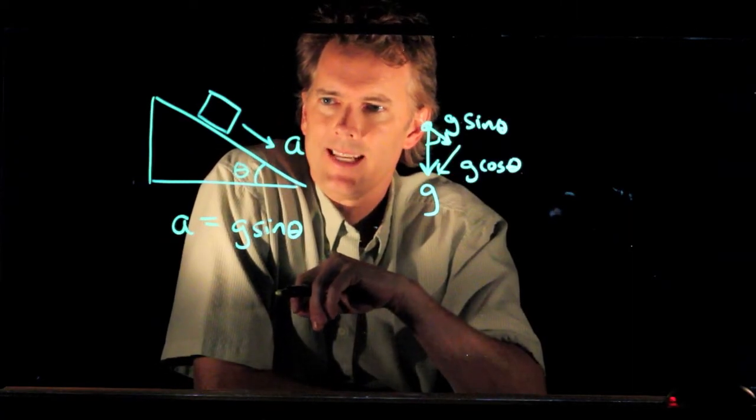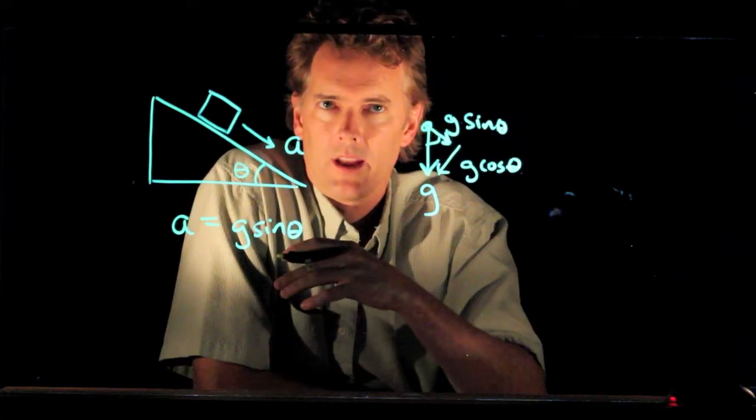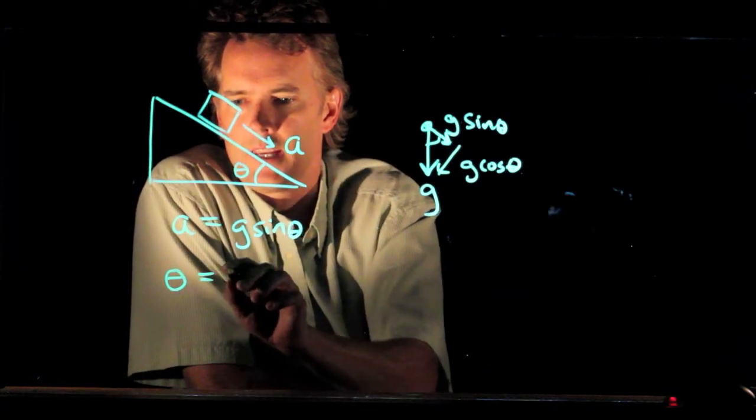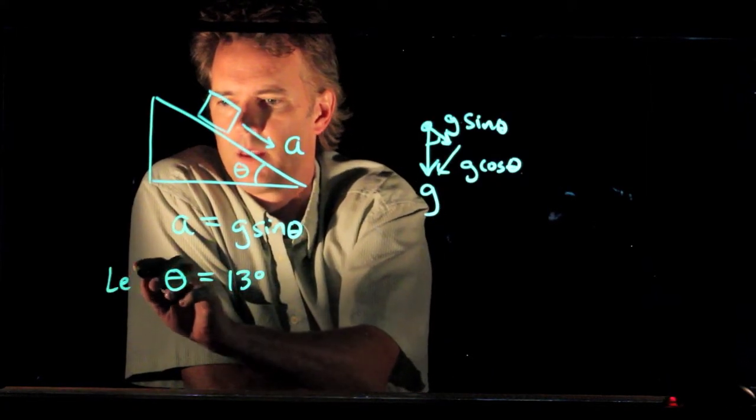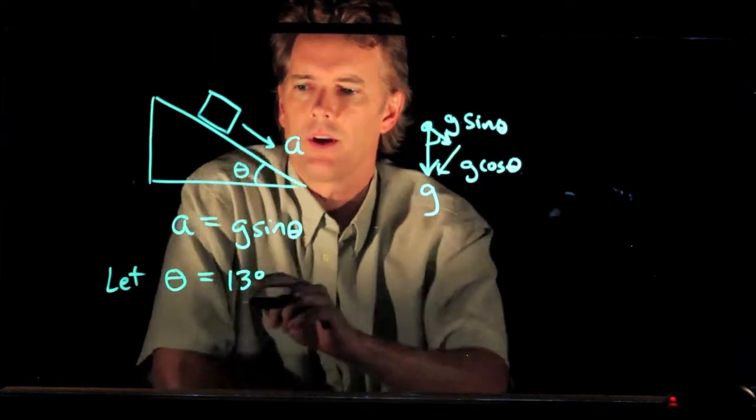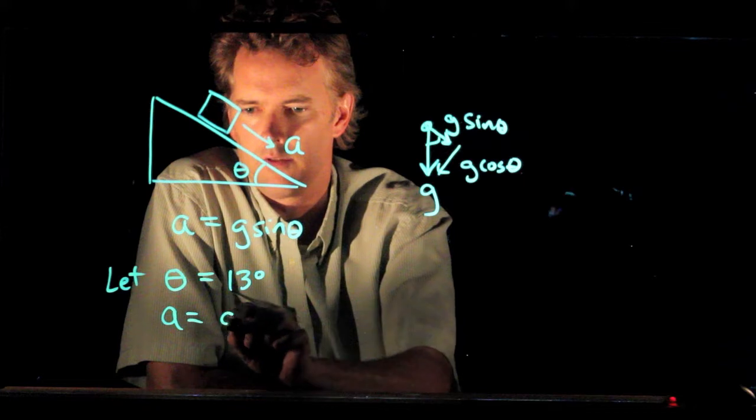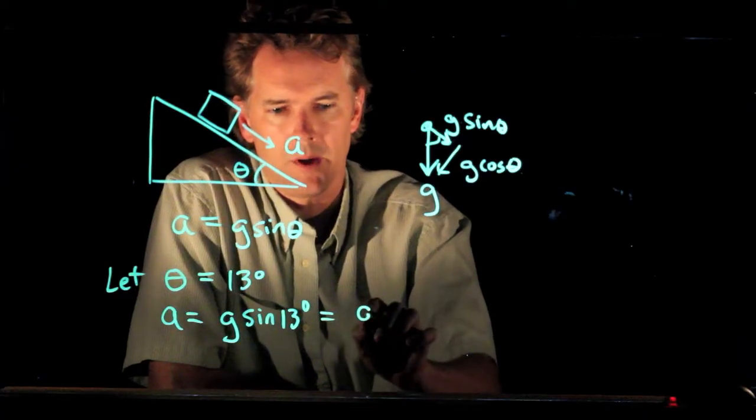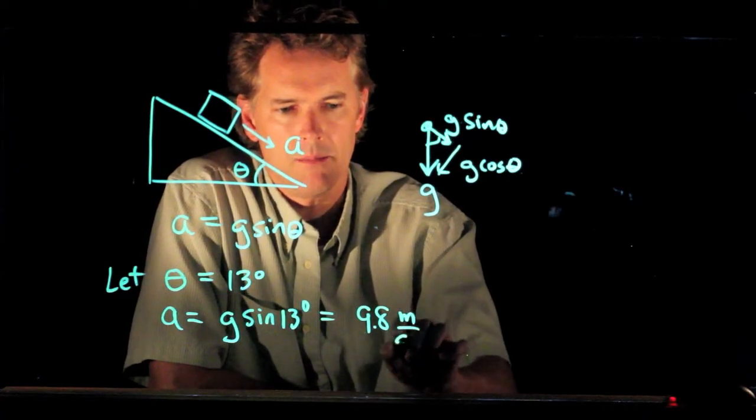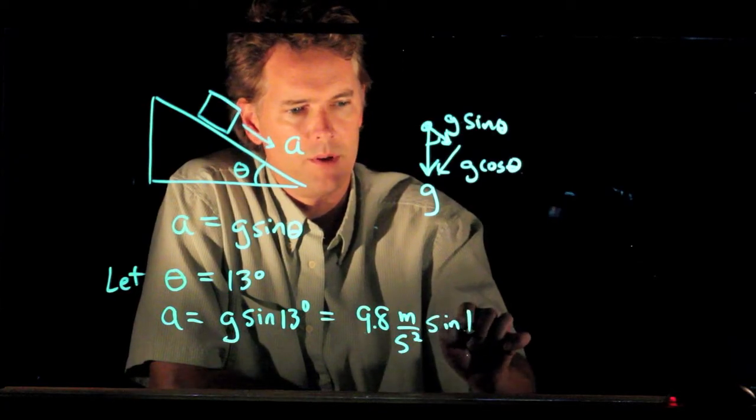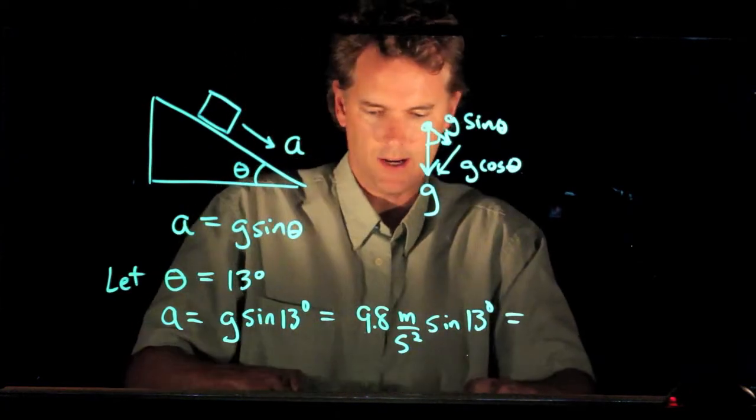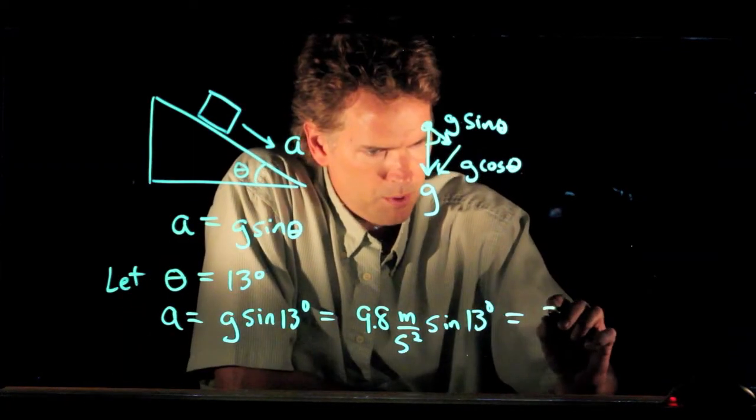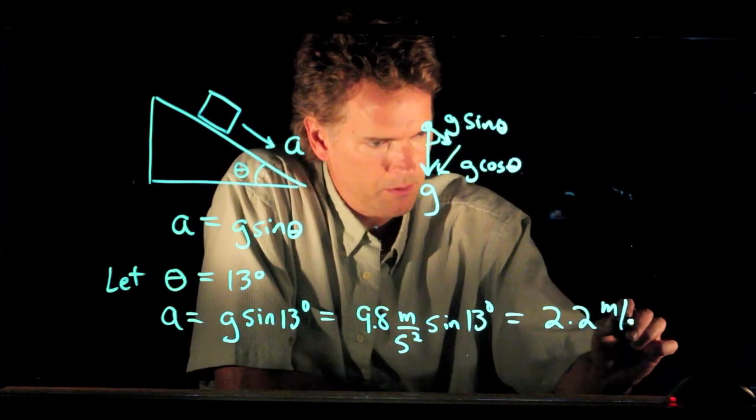All right. So if that's the acceleration down the incline, then, for instance, if we have a soapbox derby racer, and it is on an incline of 13 degrees, then the maximum acceleration it could have is g sine of 13 degrees. And so we can plug in those numbers. We know g is 9.8 meters per second squared. We plug in sine of 13 degrees to our calculator. And when I do that, I get 2.2 meters per second squared.